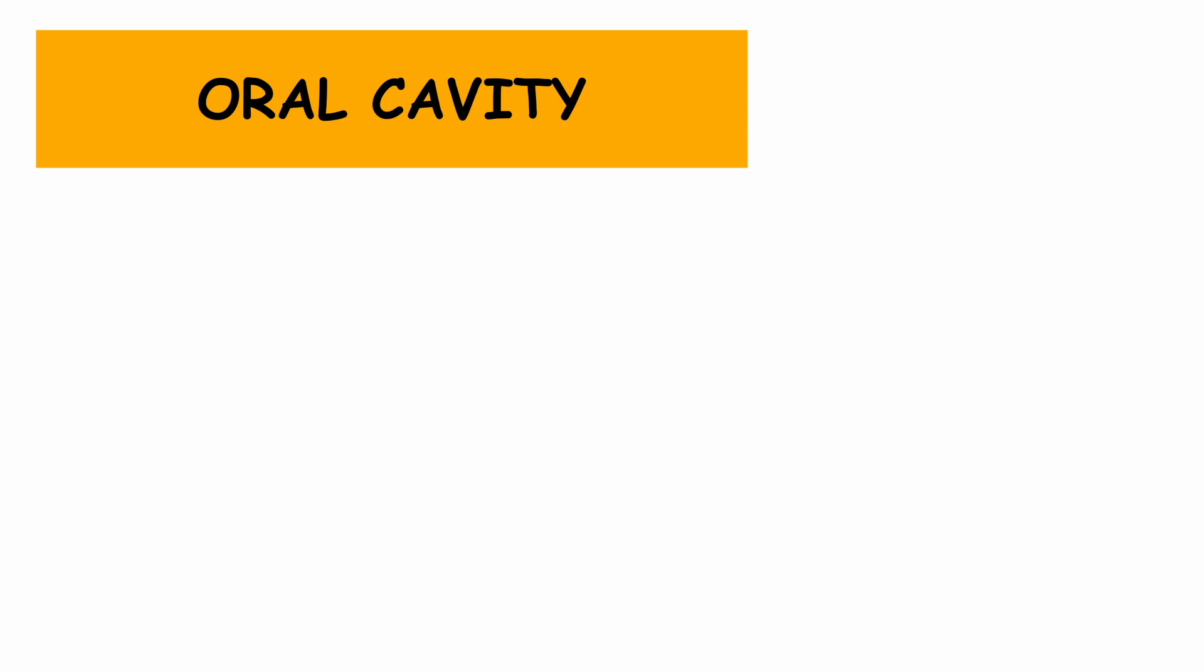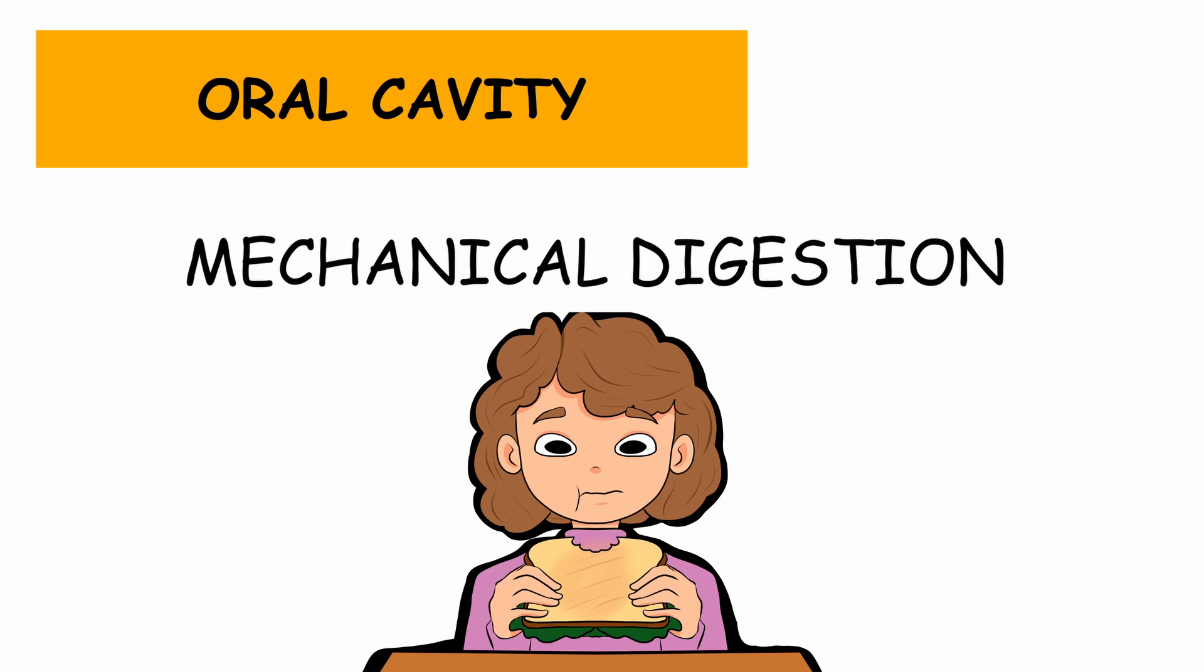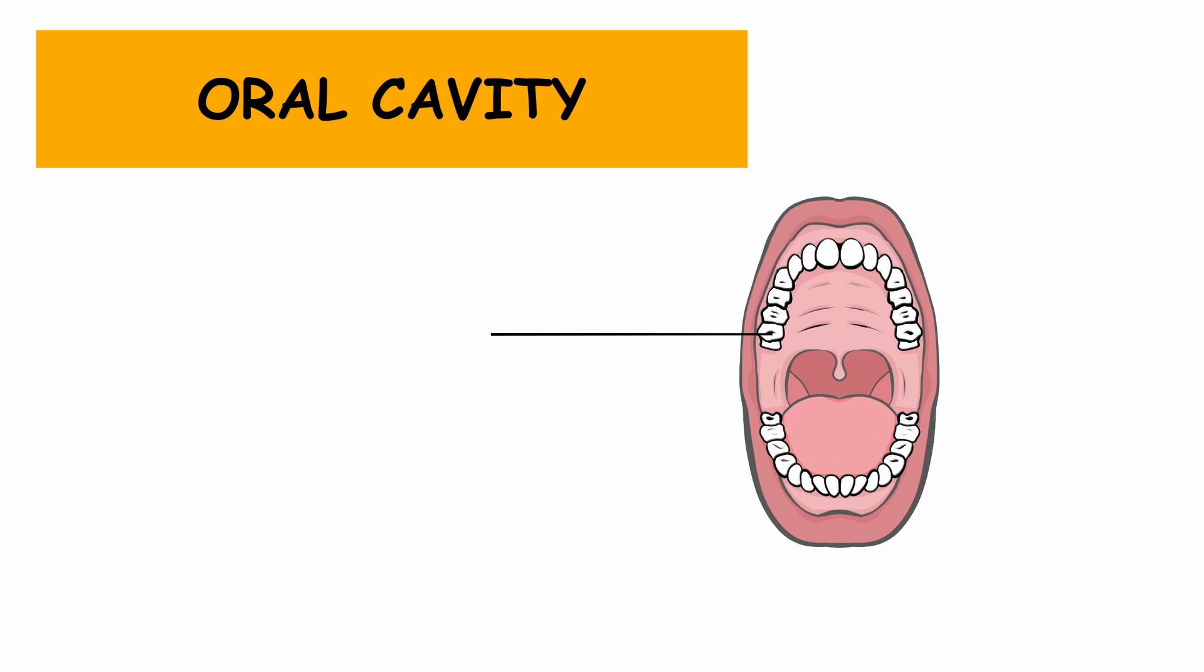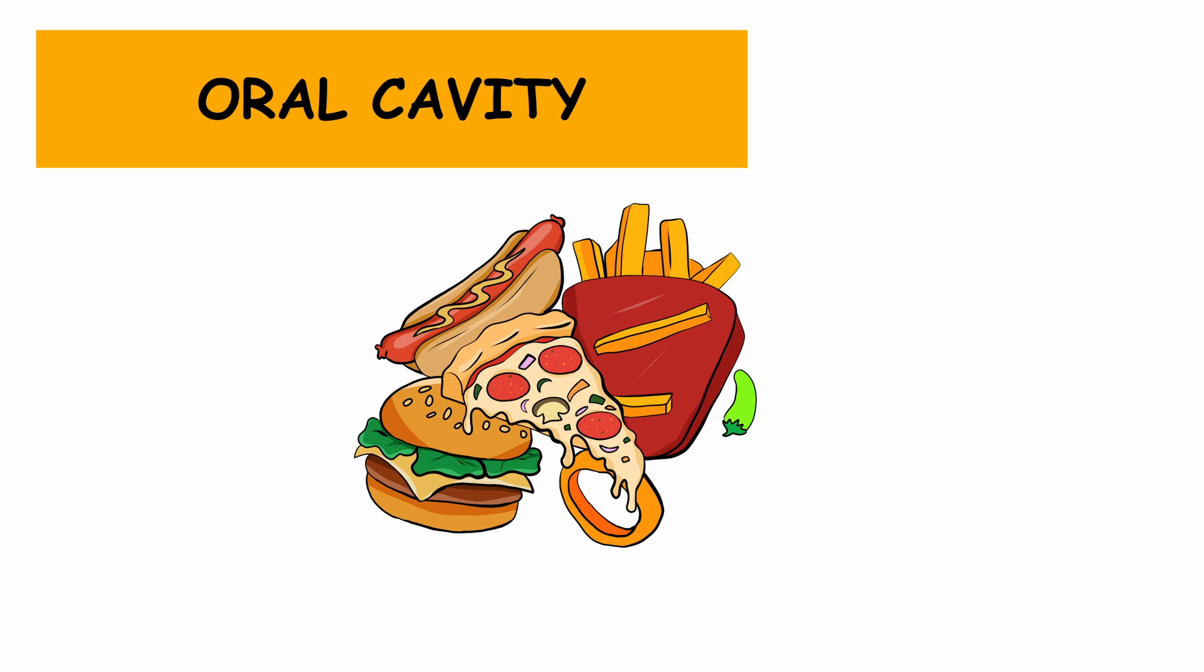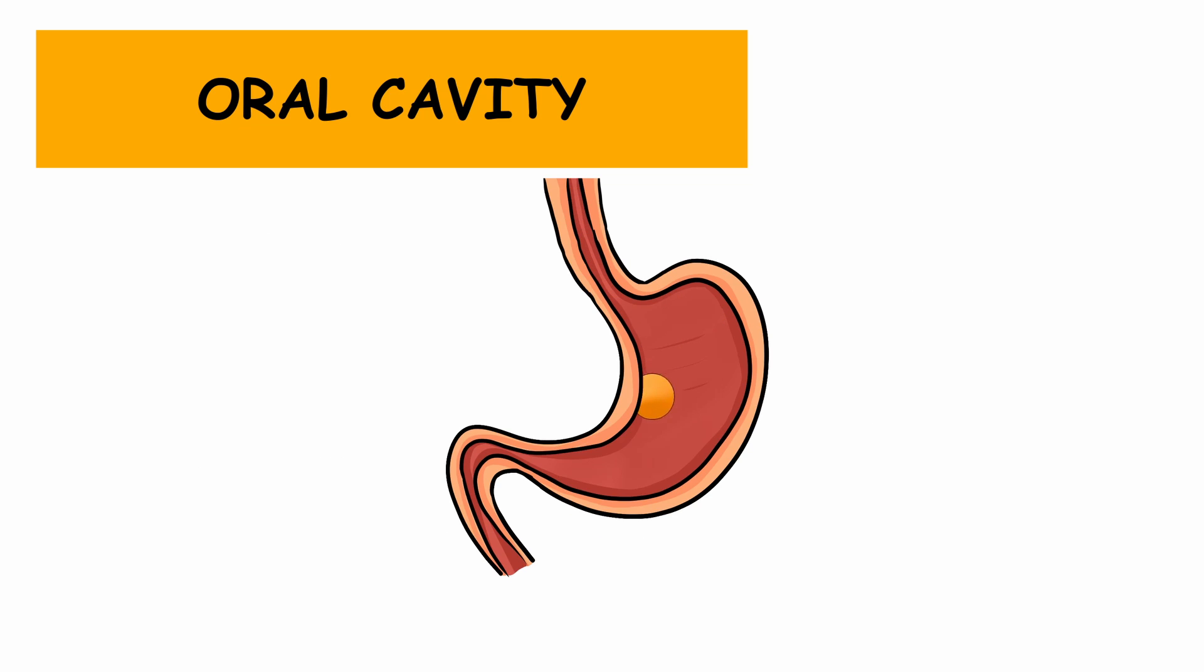In the mouth, mechanical digestion, as you would have guessed, is chewing. Our mouth uses the accessory organ, teeth. We humans have various types of teeth that allow us to break down large pieces of food into smaller ones, which allows for easy movement down the throat and better absorption by increasing its surface area.